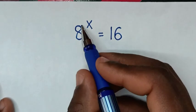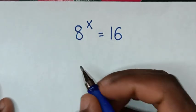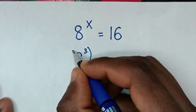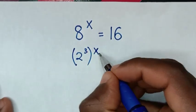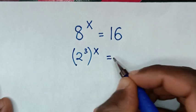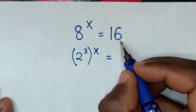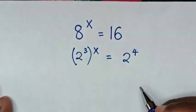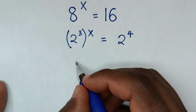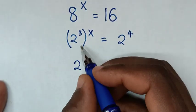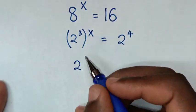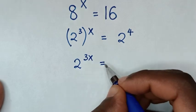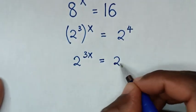So first, 8 is the same as 2 power 3, then in brackets, power of x is equal to 16, which is the same as 2 power 4. In the next step, it will be 2 power 3x is equal to 2 power 4.